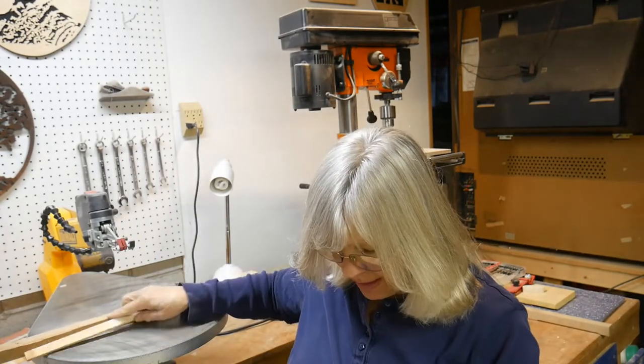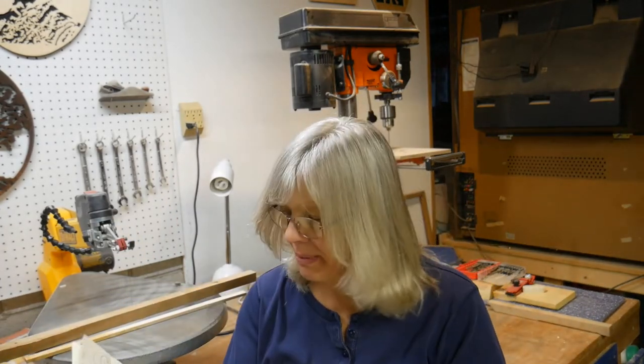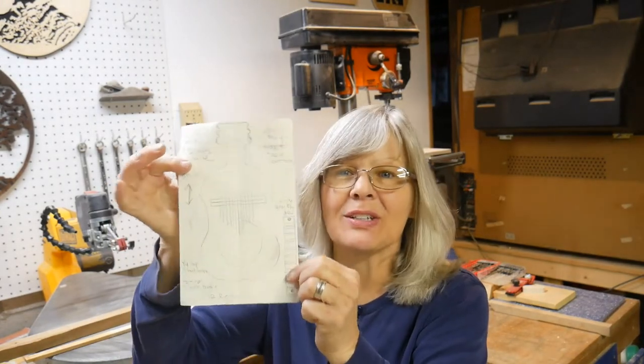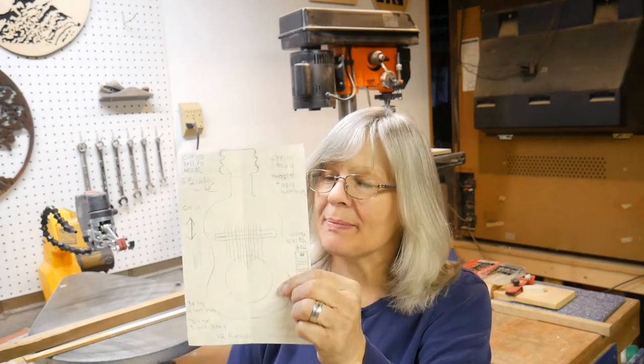I have some drawings of some other things. A thumb piano. I thought maybe I'll make that out of a guitar looking shape. It's also called a kalimba. And I like lyra harps. So I'm going to be making one of those out of cherry and also using maple.